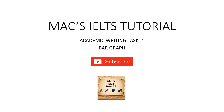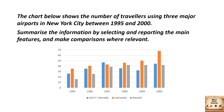Let us see the question for discussion. The question goes like this: the chart below shows the number of travelers using three major airports in New York City between 1995 and 2000. Summarize the information by selecting and reporting the main features and make comparisons where relevant.